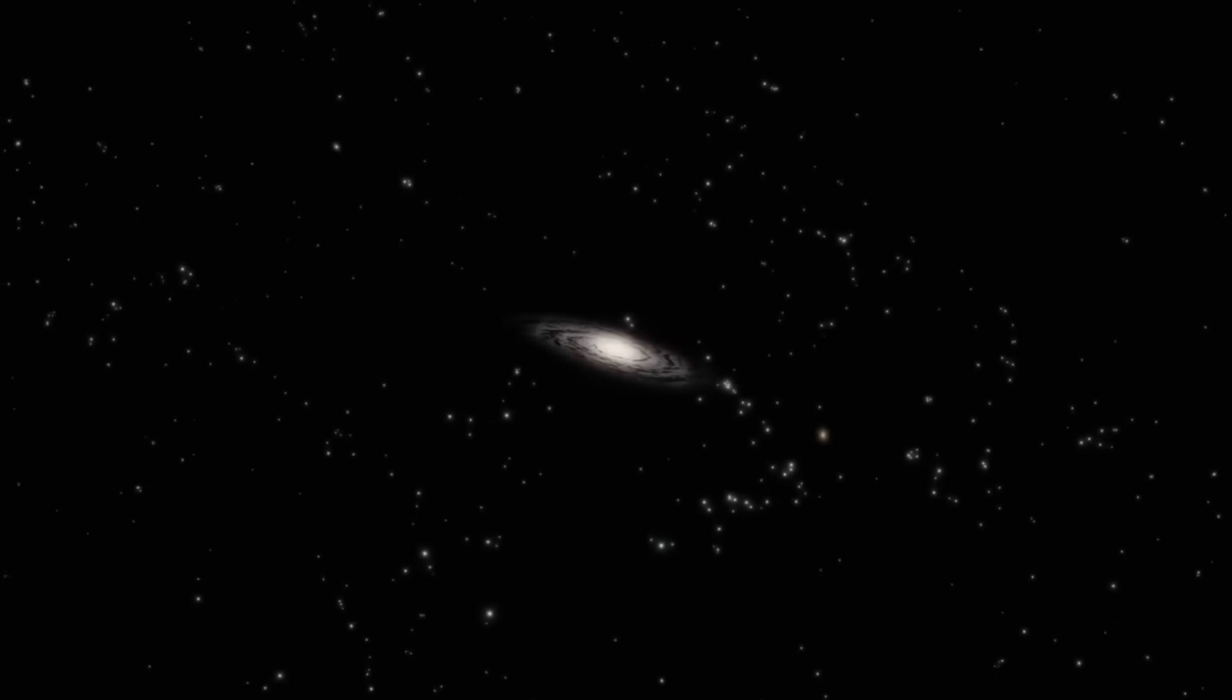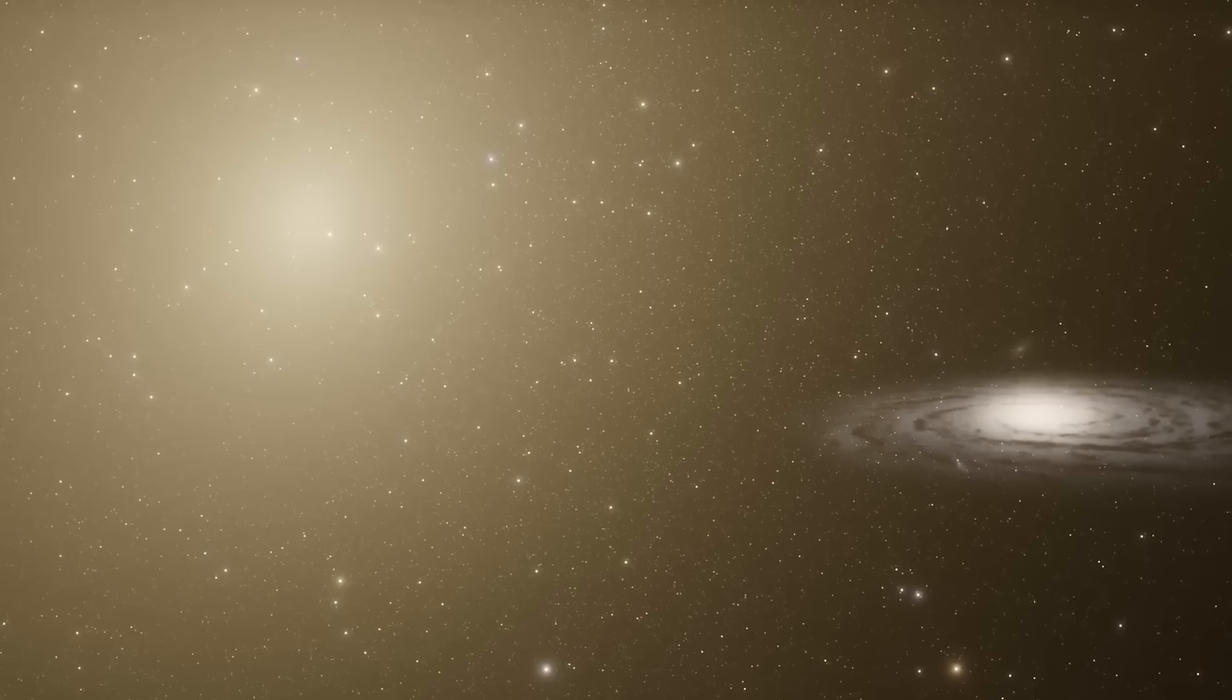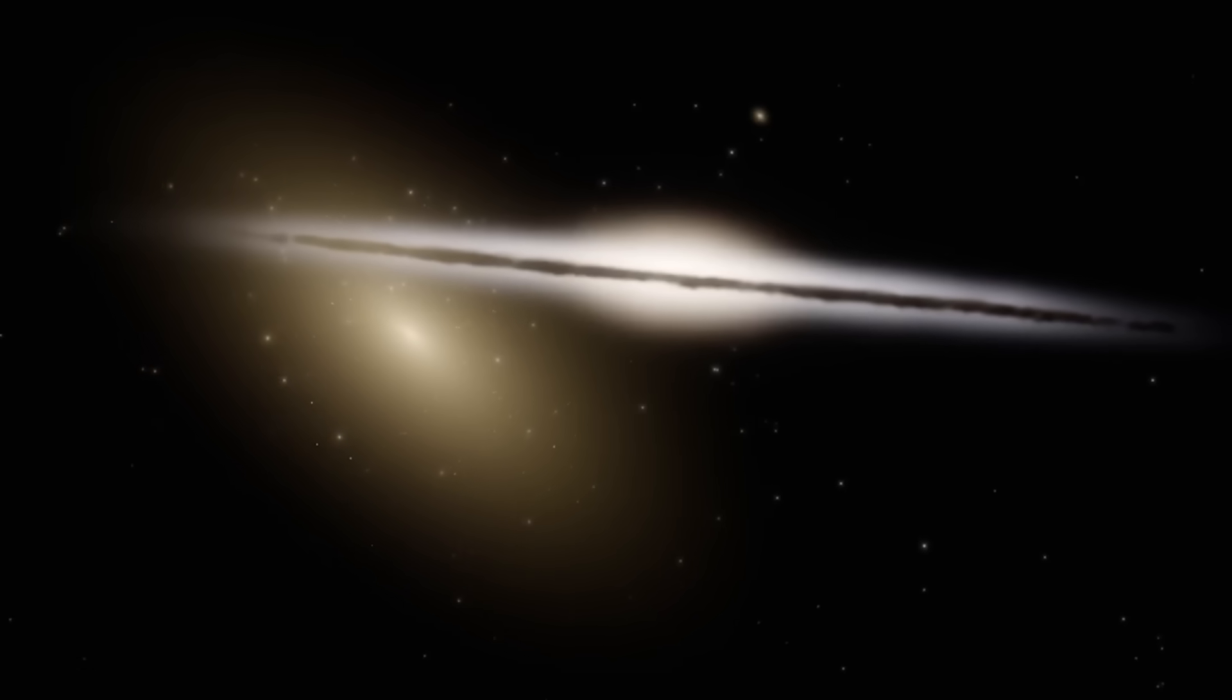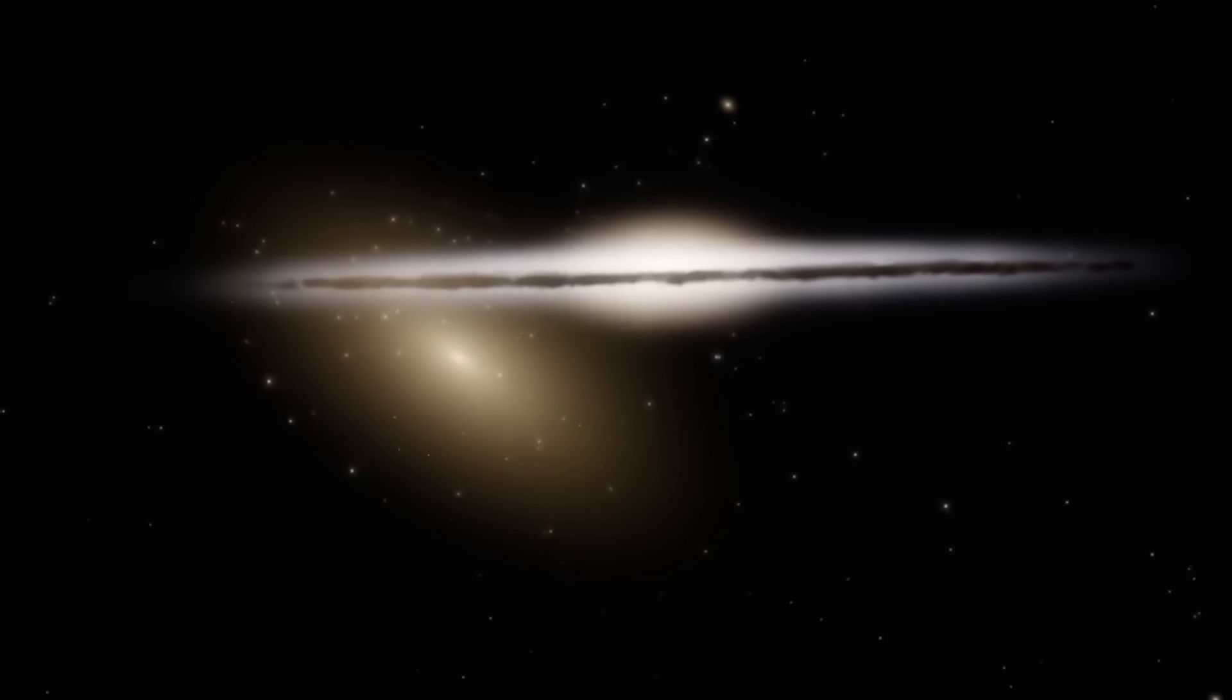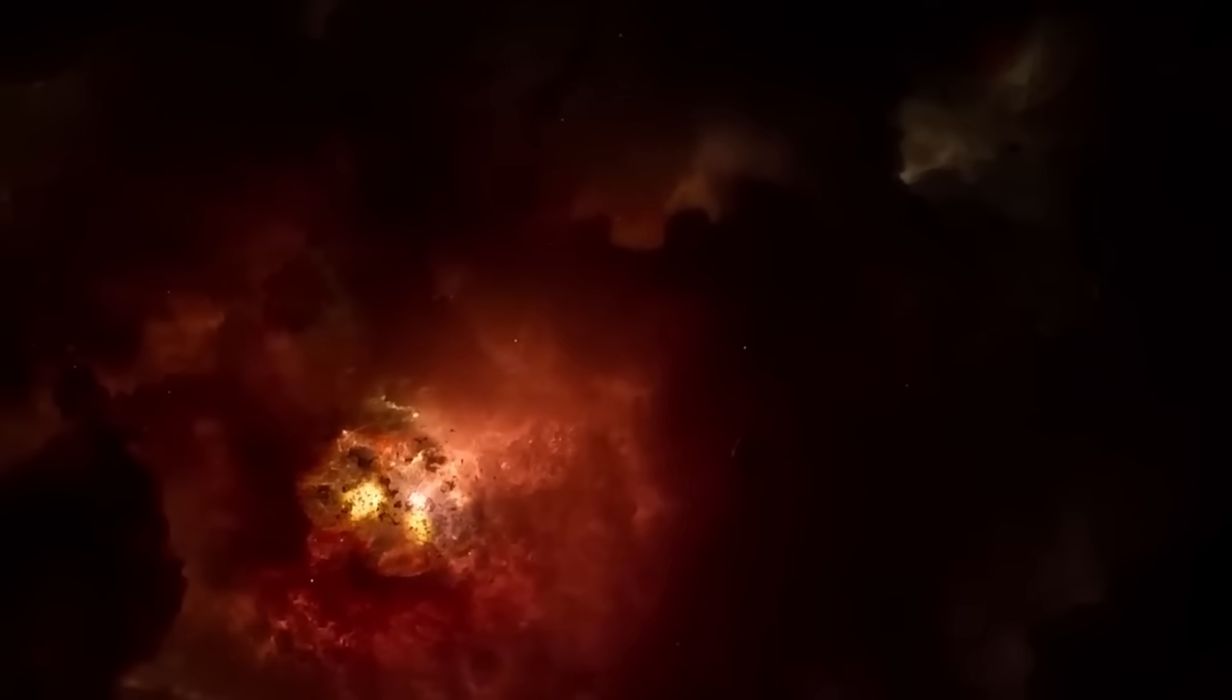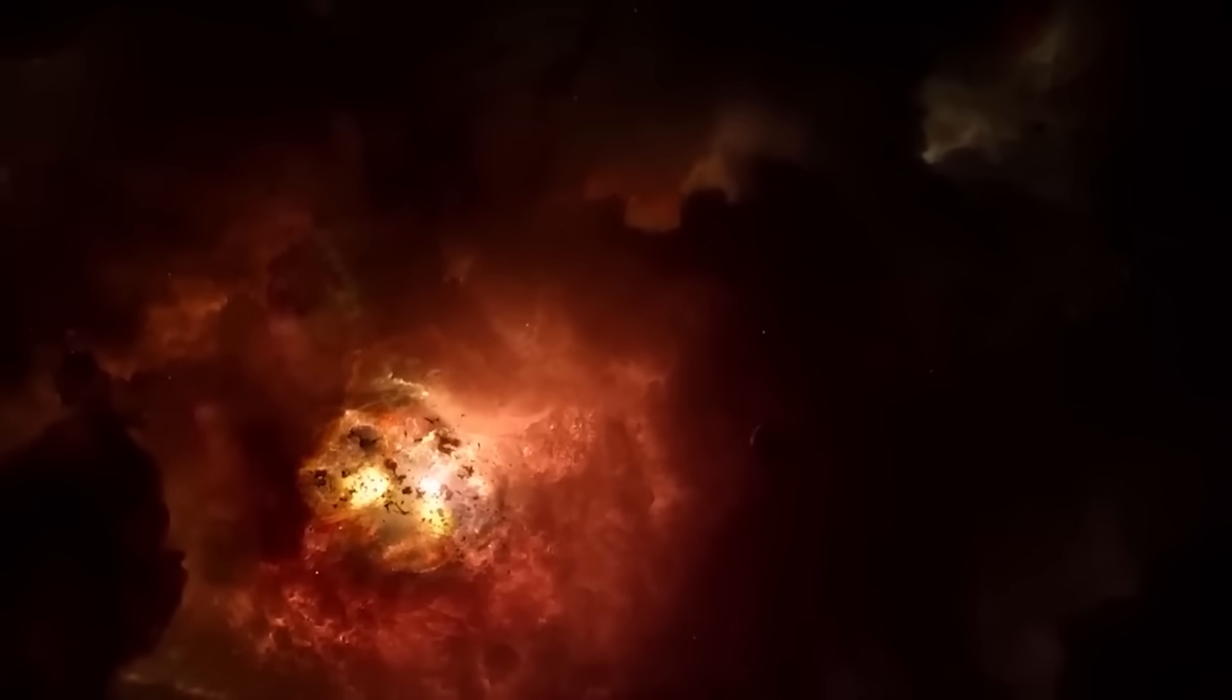But if ancient galaxies weren't shocking enough, Webb's next discovery was downright impossible. For the first time ever, it captured a direct infrared image of an exoplanet, HIP 65426b, located 385 light-years away. The image was crystal clear, but the planet's existence a total mystery.